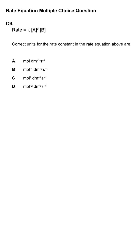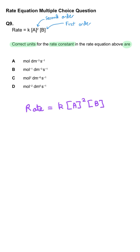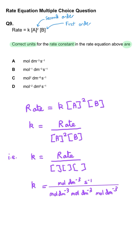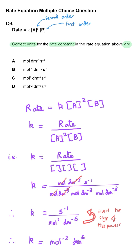The final question shows a rate equation: rate = k[A]²[B]. To find the correct units for the rate constant, rearrange to make k the subject: k = rate / ([A]²[B]). Rate has units mol dm⁻³ s⁻¹ and concentration has units mol dm⁻³. One mole and one dm⁻³ cancel, leaving s⁻¹ divided by mol² dm⁻⁶. Bringing mol² to the top gives mol⁻², dm⁻⁶ becomes dm⁶, and s⁻¹ remains. So D is correct.